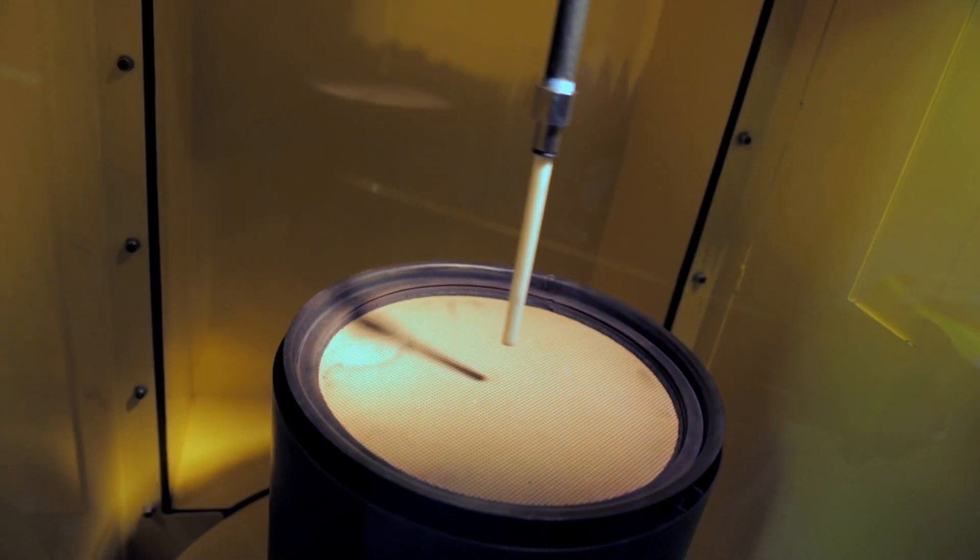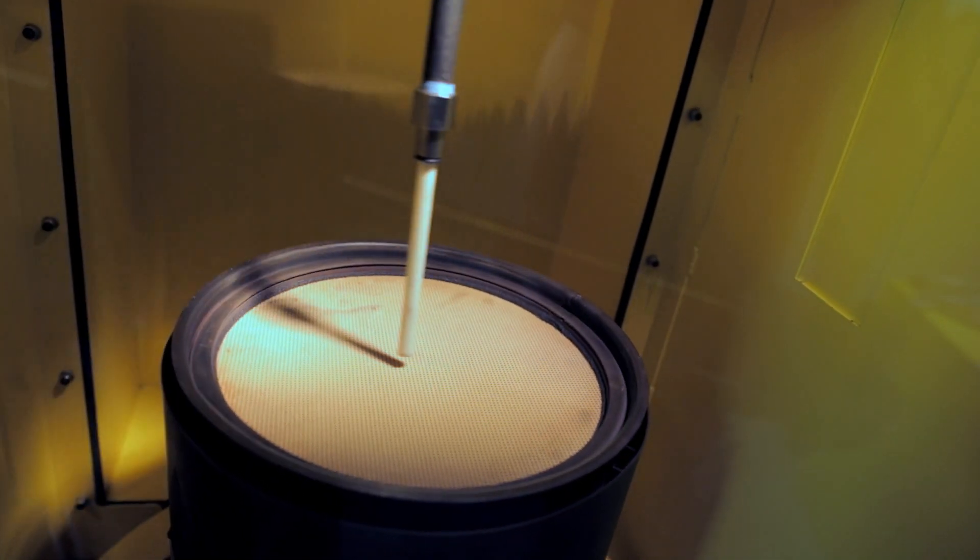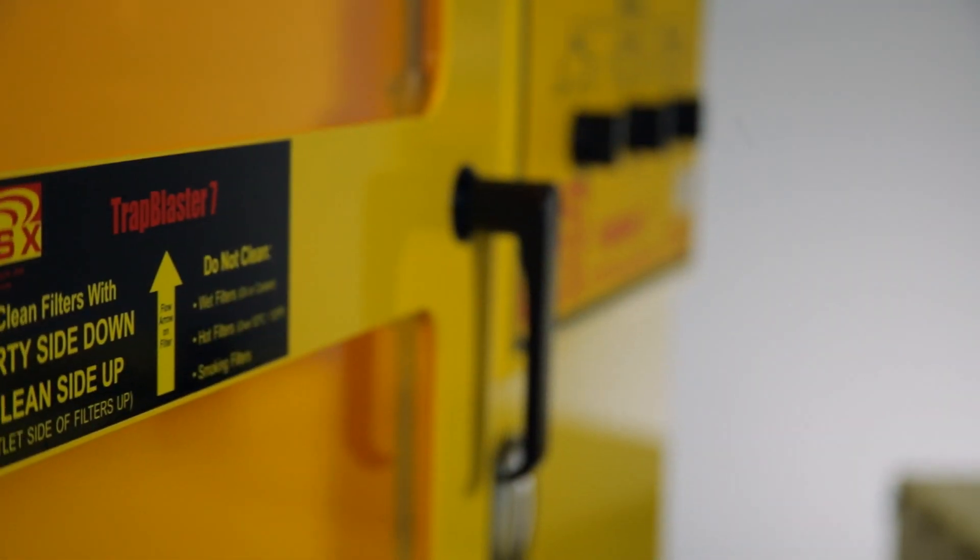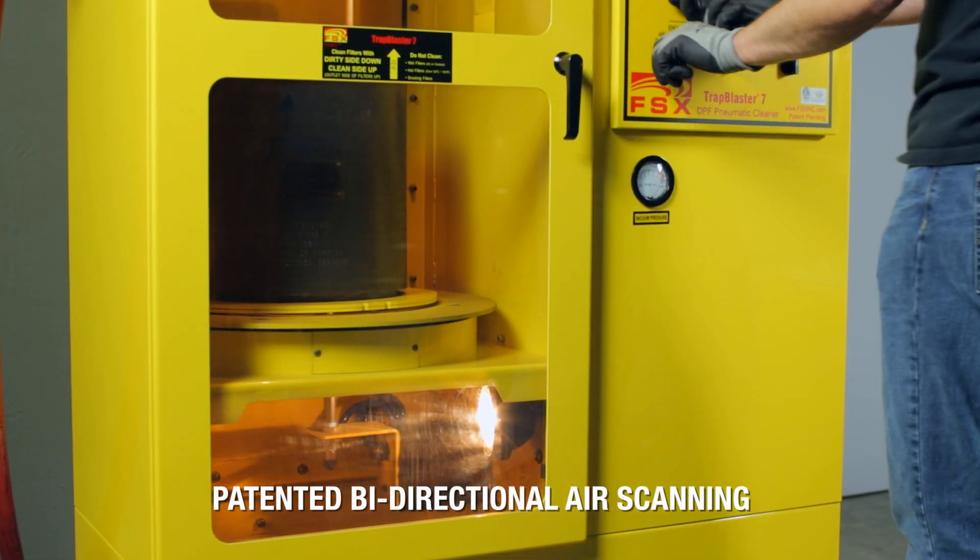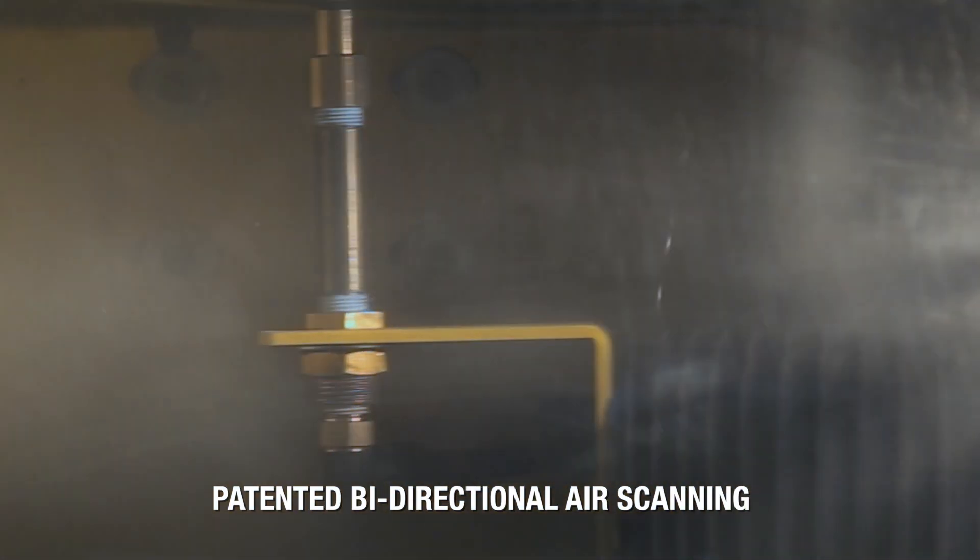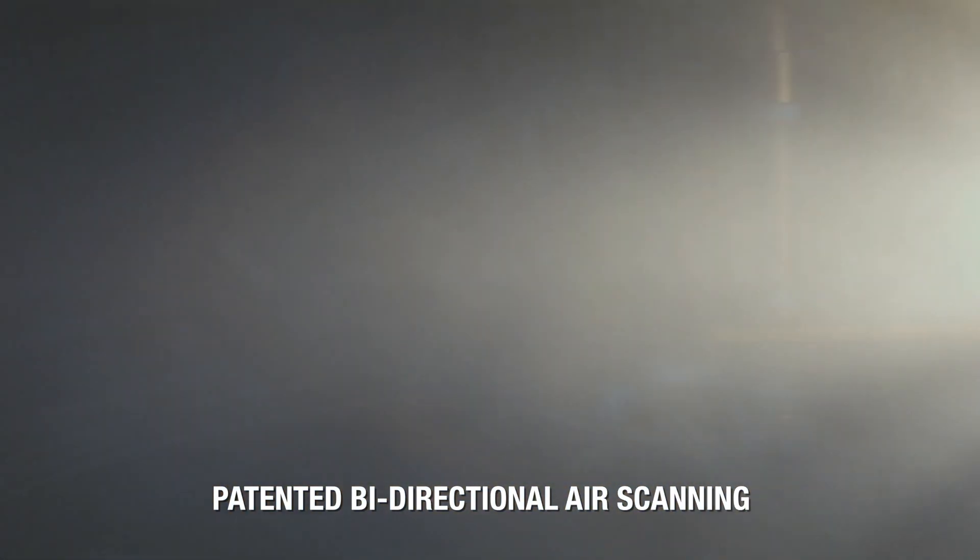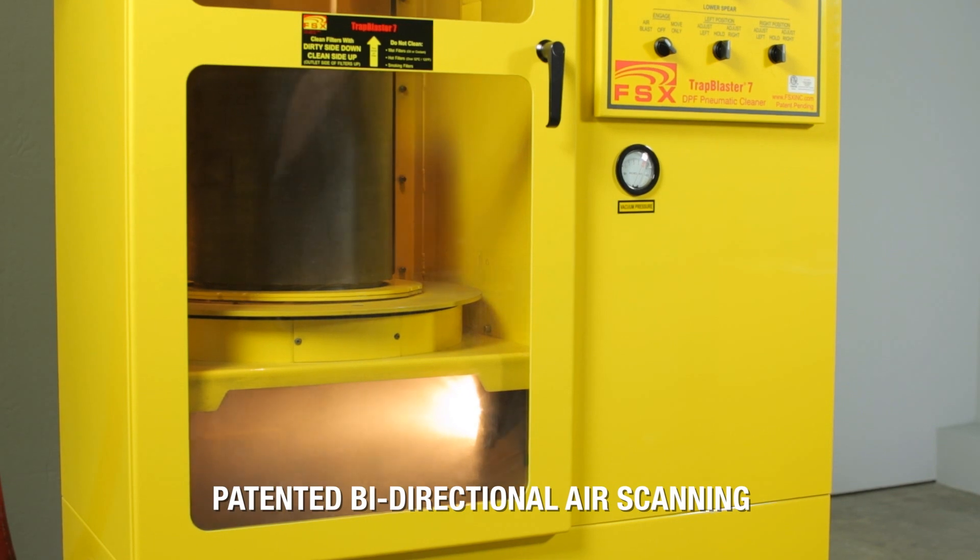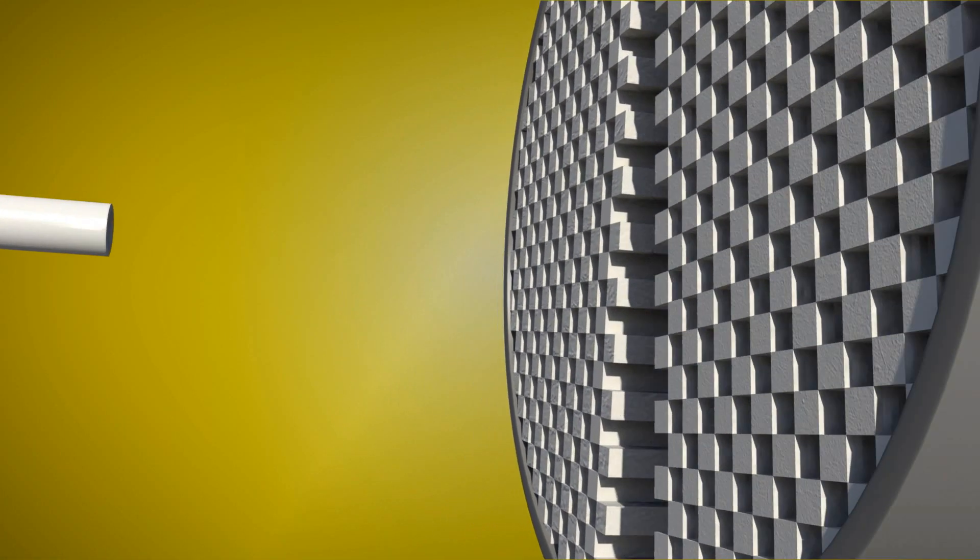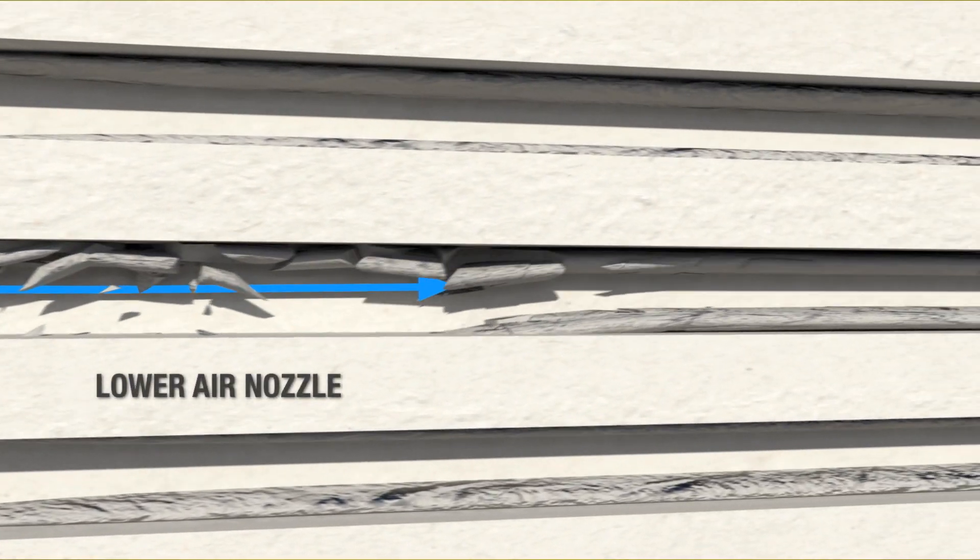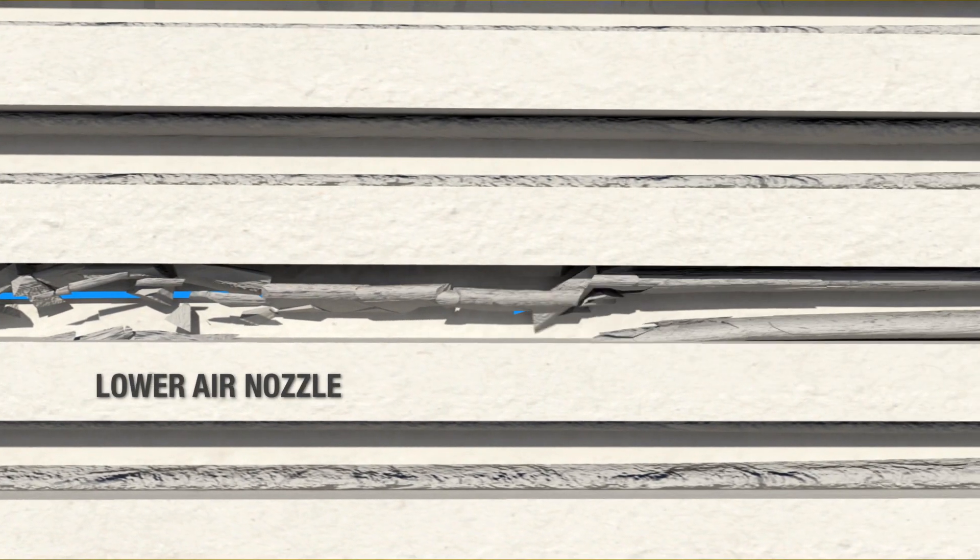The only way to clean the hardened ash plugs is to attack them head-on with a massive amount of air volume. The FSX Trap Blaster uses our patented bi-directional air scanning technology to prolong the life of the DPF by cleaning each cell on both sides of the filter. The Trap Blaster addresses each cell individually with extreme airflow and high pressure. The lower air nozzle attacks the hardened ash head-on, causing it to break apart.